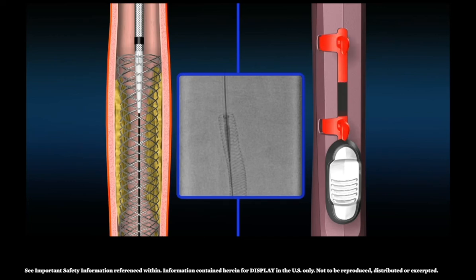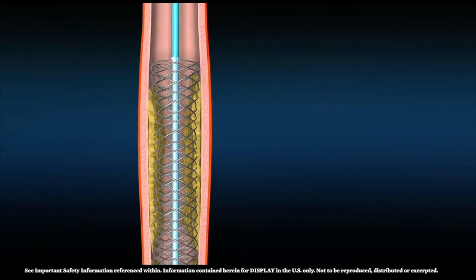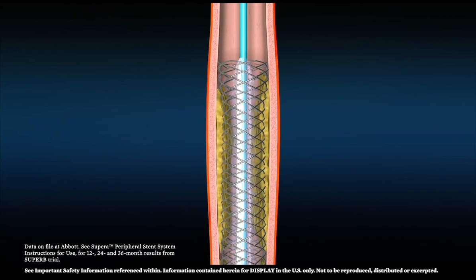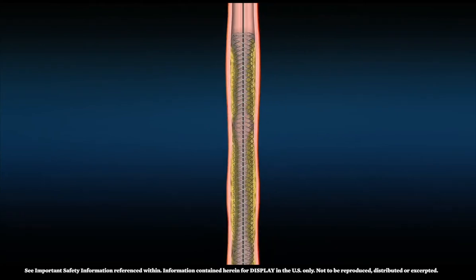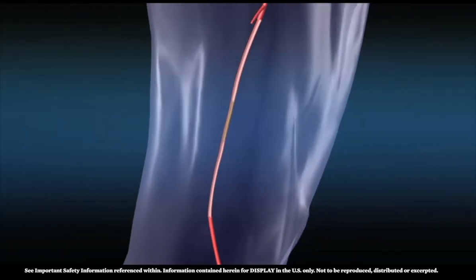Under fluoroscopy, remove the device from the guide wire and evaluate the improved luminal quality of the treated area. The Supera implant is an effective option for the dynamic environment of the SFA and proximal popliteal. Its unique design mimics the natural anatomy for durable outcomes.